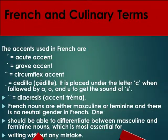The accents used in French are: the acute accent (é), the grave accent (è), and the circumflex accent (ê). The cedilla (ç) is placed under the letter 'c' when followed by 'a', 'o', and 'u' to give the sound of 's'. The dieresis (ë) is also known as accent tréma.